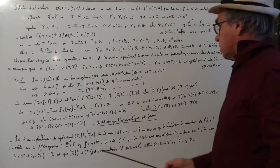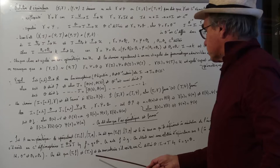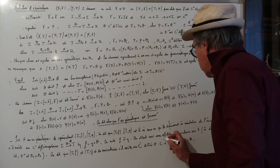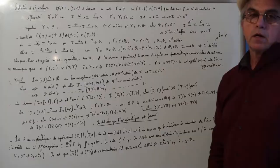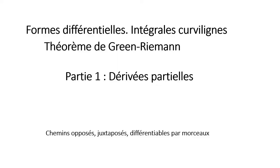Par contre, si If et Jg sont deux représentations de l'arc géométrique, on dira qu'elles sont de sens contraire s'il existe un C1-difféomorphisme θ strictement décroissant tel que f est égale à g rond θ.